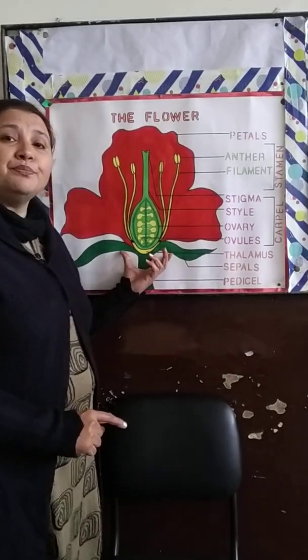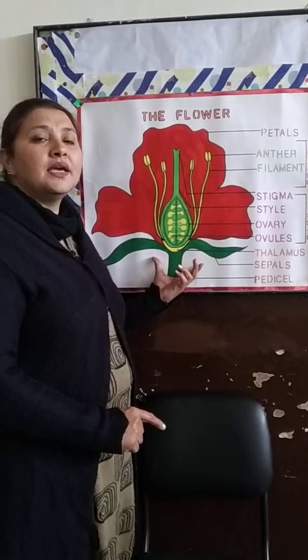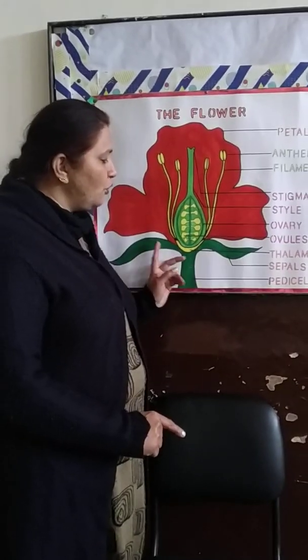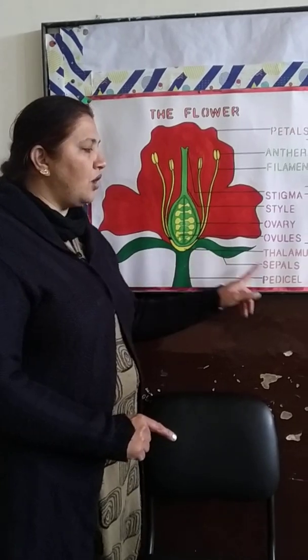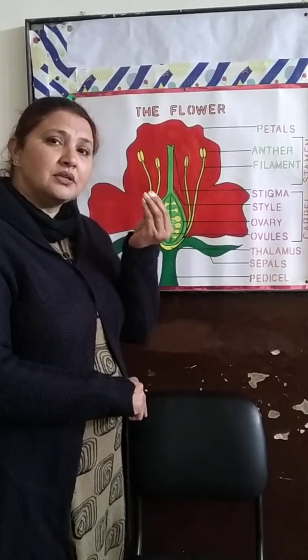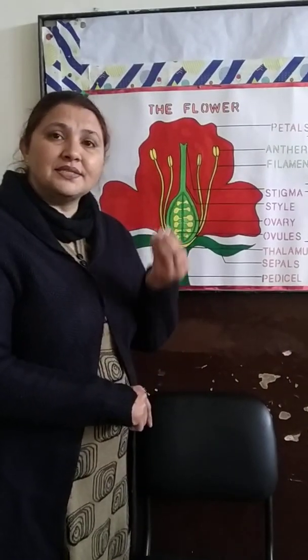The outermost whorl of the flower is made up of green colored leaves, and those leaves collectively are called the calyx. Individually, those leaves are called sepals. The main function of the sepals is to aid in florescence and also to protect the flower at the bud stage.